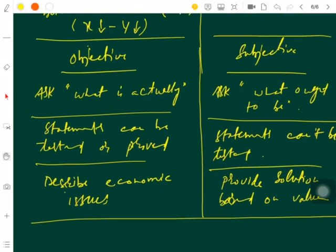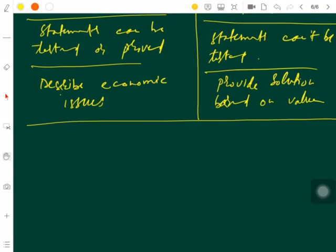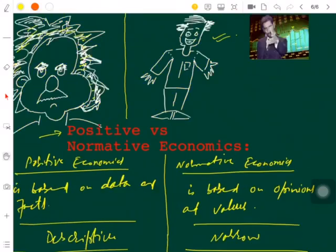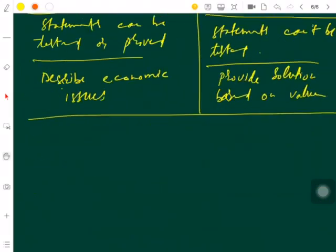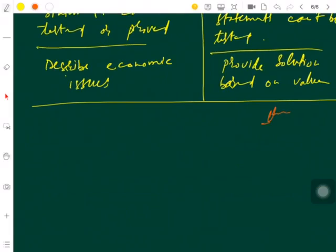Positive economics is going to describe the economic issues in reality, and vice versa for normative economics. This was a very small topic. I hope you enjoyed it, right from the beginning where we talked about Mr. Einstein and Mr. Commoner. We will always try to be on the side of Mr. Einstein, not Mr. Commoner — never try to be a commoner; you have to be an Einstein who can describe things in a practical nature. That is why we study economics. We are done with one more topic — positive versus normative economics — and we will proceed with the final lecture, which is the production possibility curve.